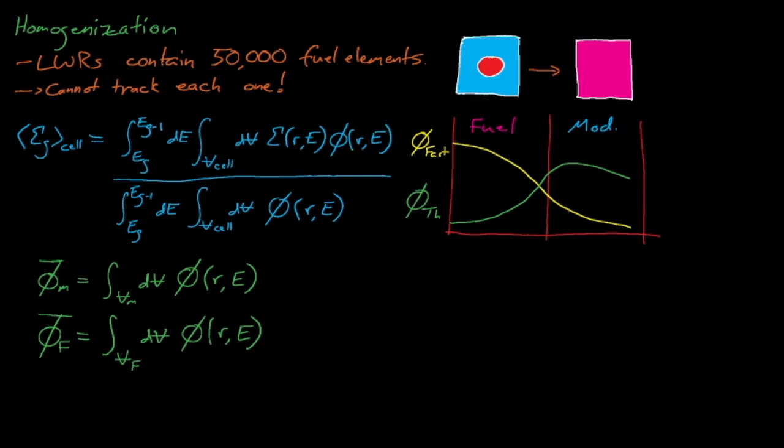We'll define another term known as the cell disadvantage factor. The cell disadvantage factor is simply the ratio of the average flux in the moderator to the average flux in the fuel. In general, this cell disadvantage factor and these average fluxes refer to the thermal fluxes in the fuel. So what values can we generally expect for this disadvantage factor? Well, for fast neutrons,